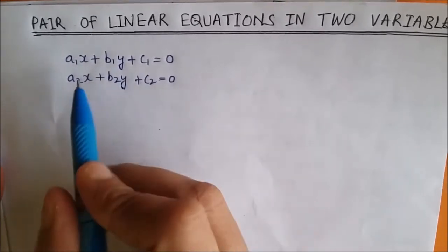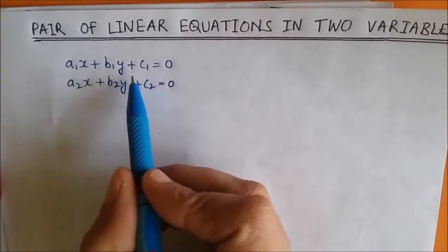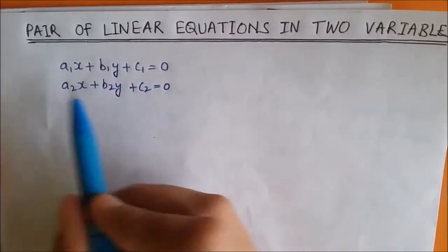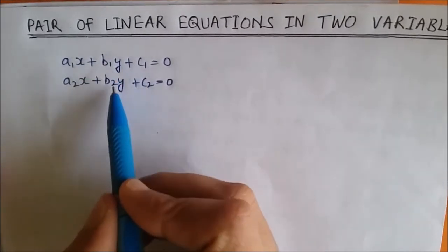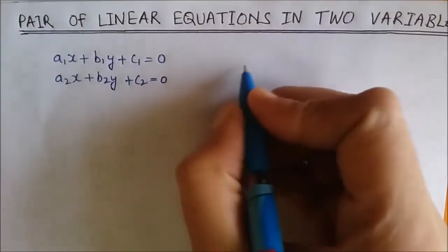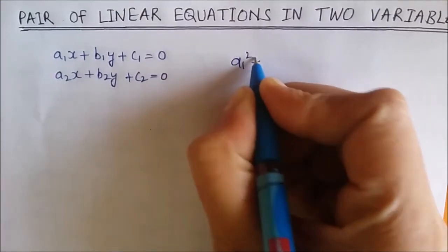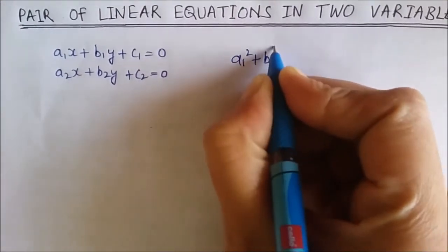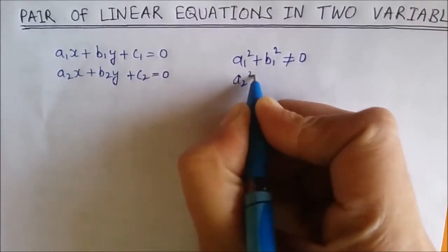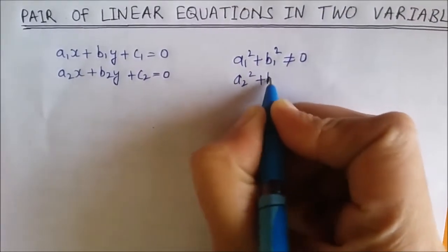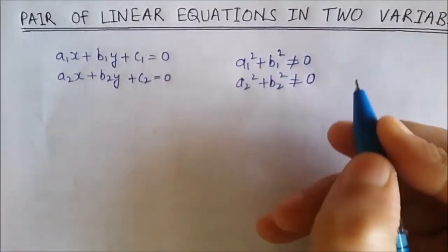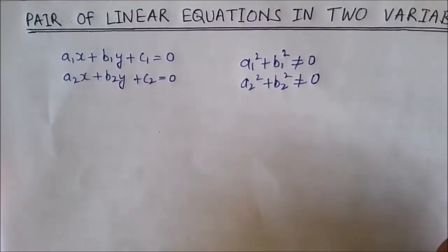A linear equation is of the form a1x plus b1y plus c1 is equal to 0. These are two linear equations where a1, a2, b1, b2 and c1, c2 are real numbers such that a1 squared plus b1 squared is not equal to 0, and a2 squared plus b2 squared is not equal to 0. These are called the pair of linear equations in two variables.